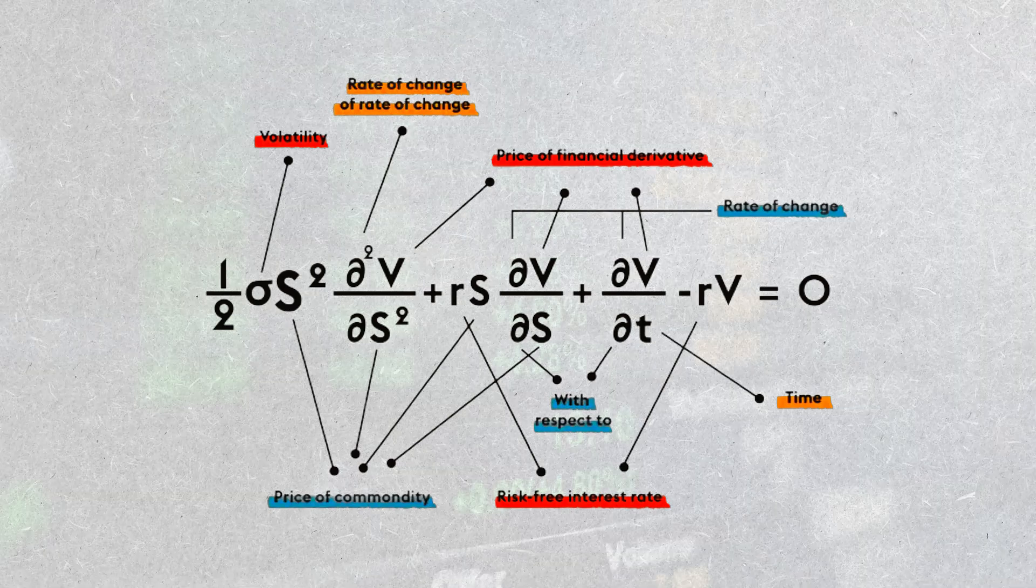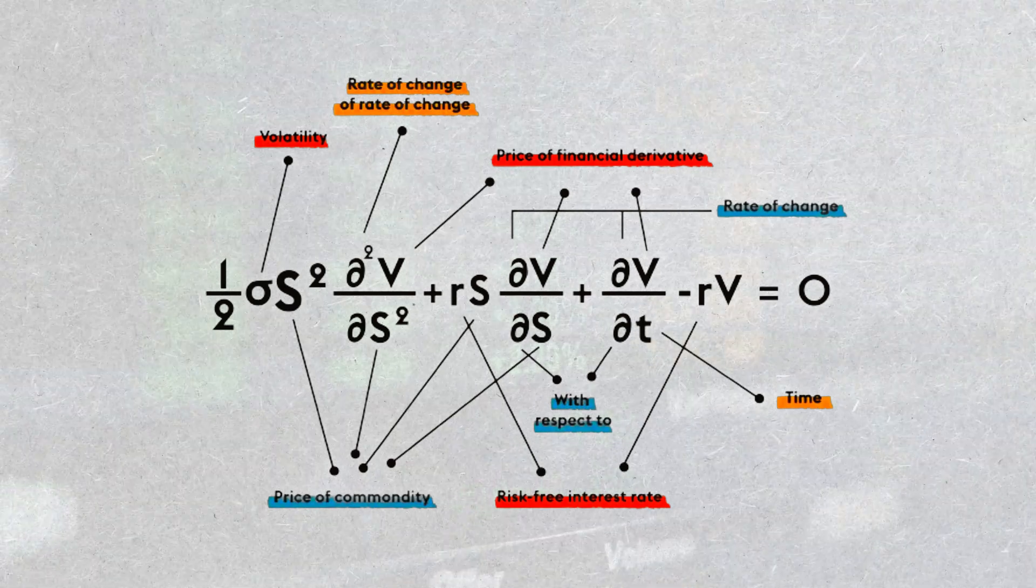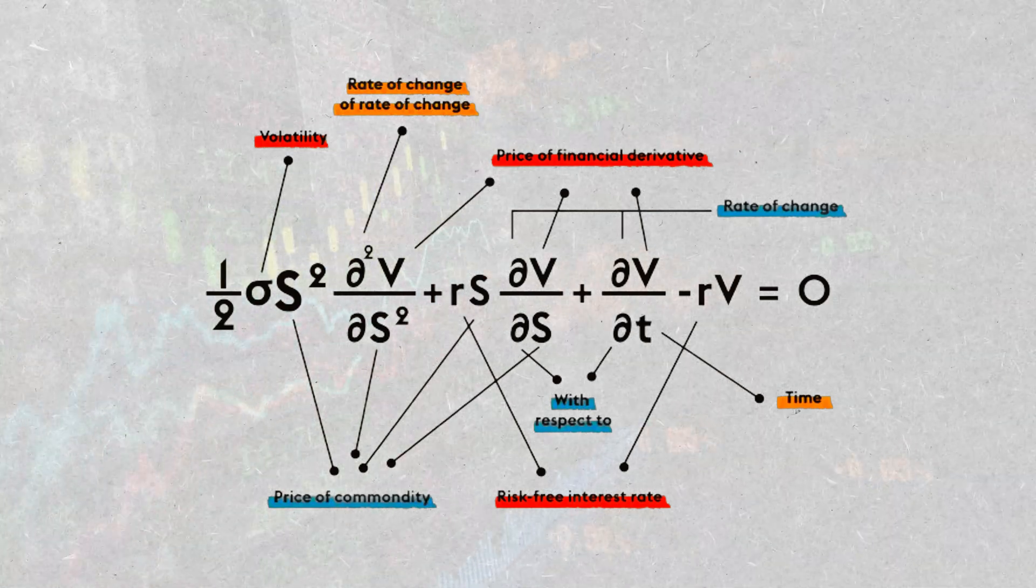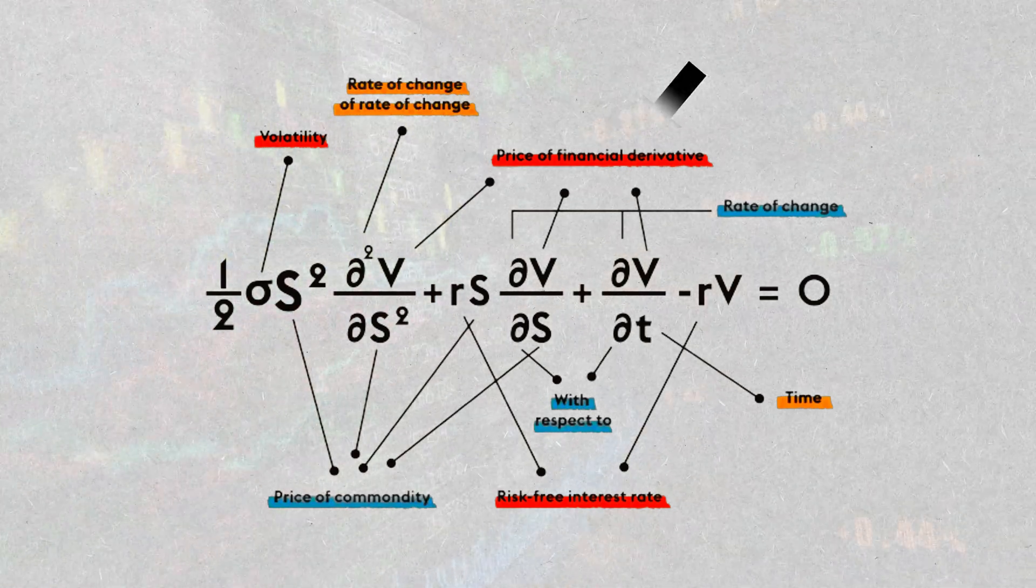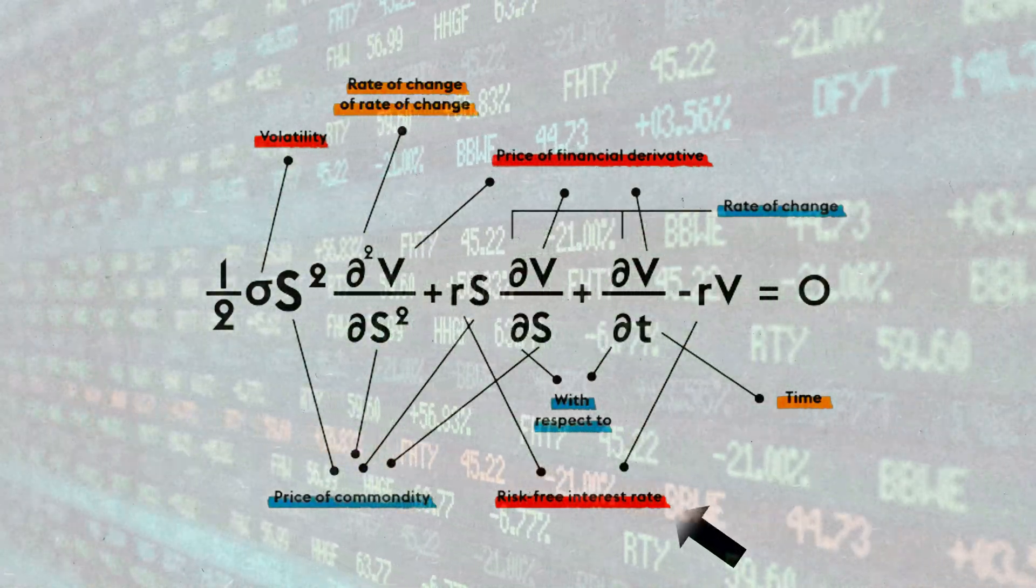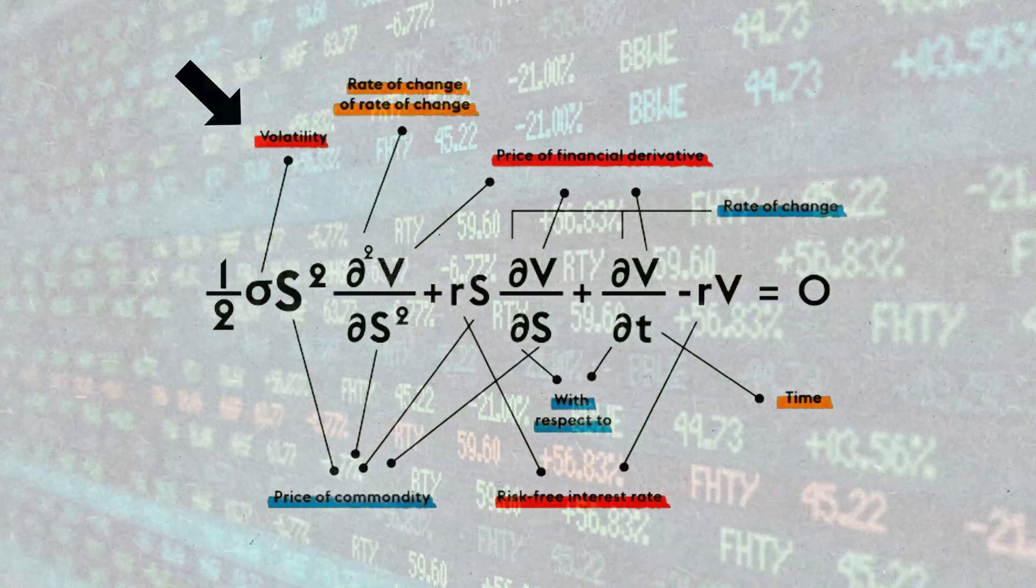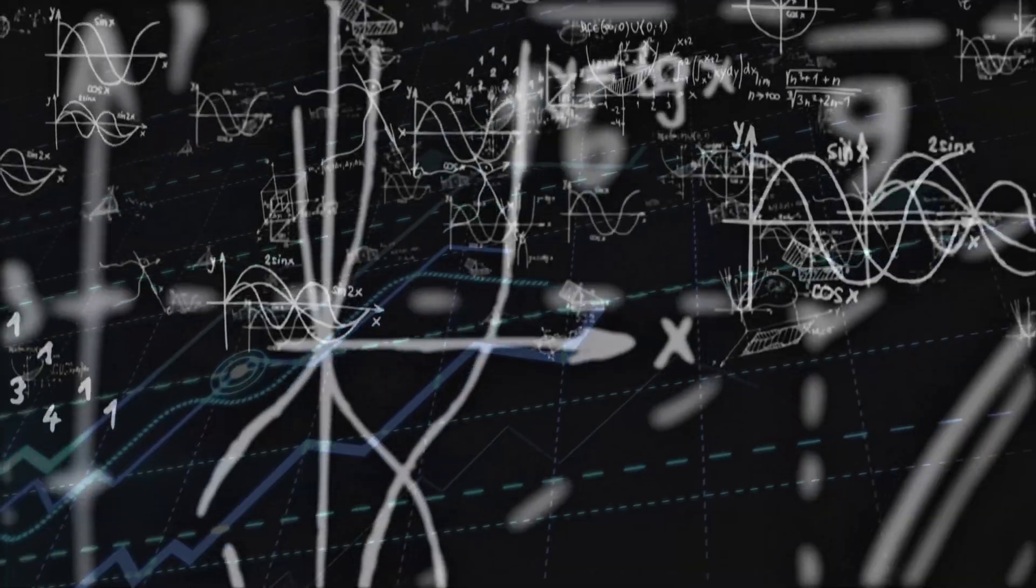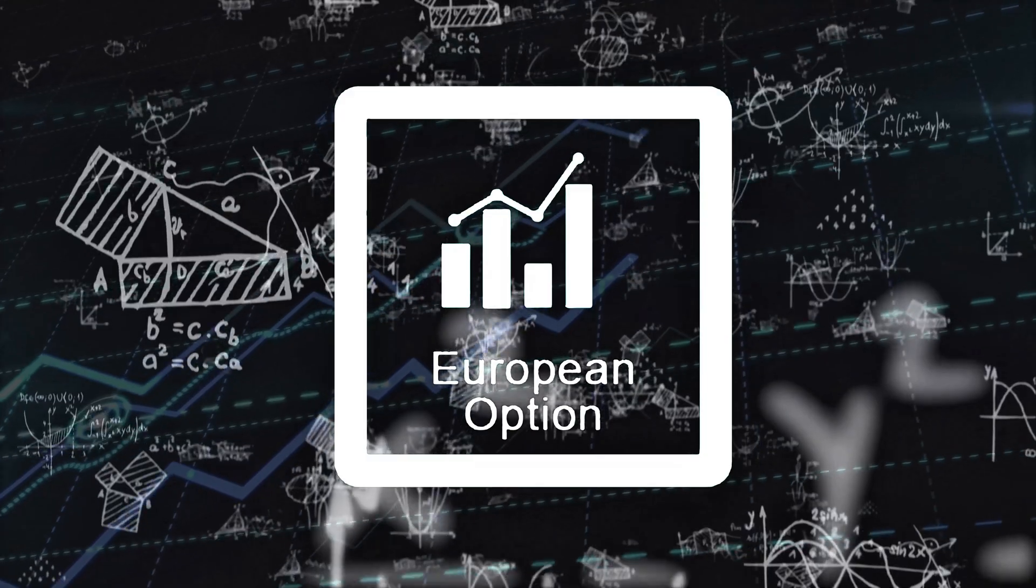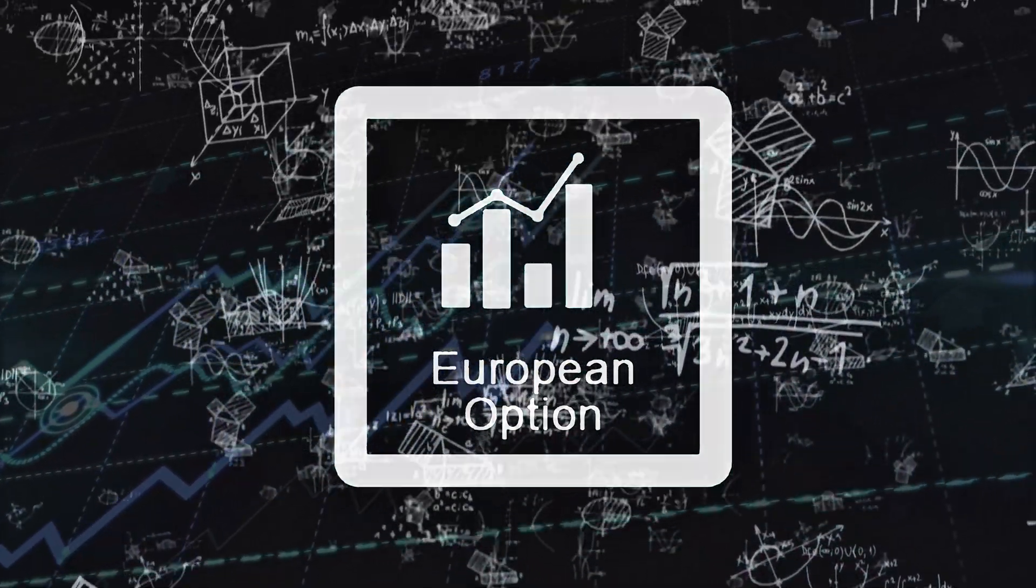Their brilliant equation allowed traders, for the first time, to accurately calculate the fair value or theoretical price of an option using factors like the strike price, time to expiration, underlying asset price, risk-free interest rates, and the asset's implied volatility from market data. This quantitative breakthrough was especially valuable for pricing European-style options, which can only be exercised at the expiration date.